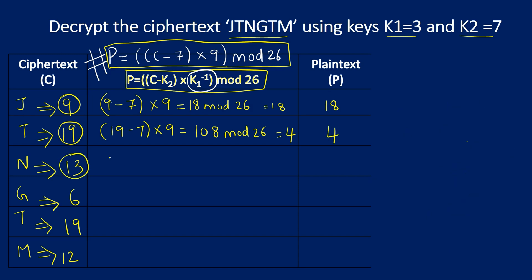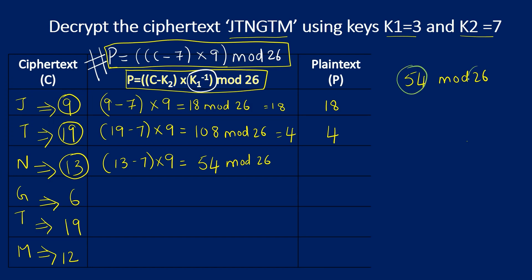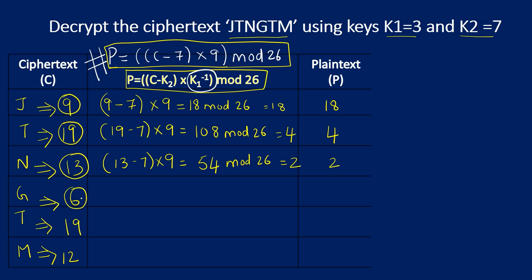For C = 13: (13 − 7) × 9 mod 26 = 6 × 9 mod 26 = 54 mod 26. Since 54 is greater than 26, we divide: 26 × 2 = 52, remainder = 2. So 54 mod 26 = 2, and the recovered plaintext number is 2.